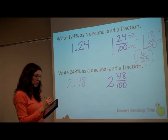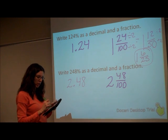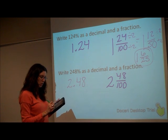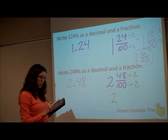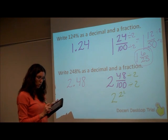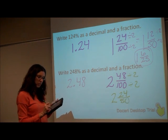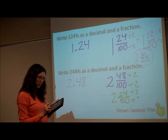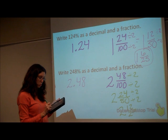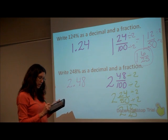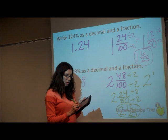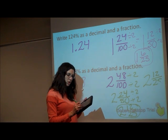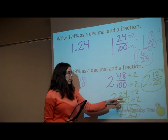Again, we can simplify. It's 48 over 100. Let's divide by 2 — that would be 2 and 24 over 50. I can still divide by 2: 2 and 12 twenty-fifths. And I can't simplify any more. So it's 2 and 12 twenty-fifths.